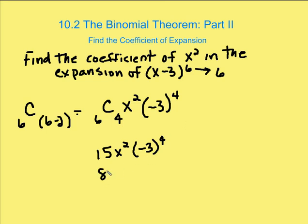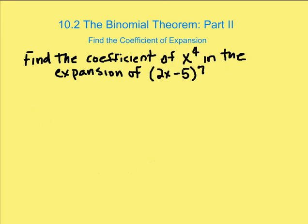So now I have 81 times 15x squared, and that's going to be your answer. Let's take another problem. In this case, we want to find the coefficient of x to the fourth in the expansion of 2x minus five to the seventh.